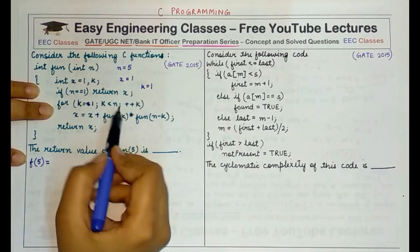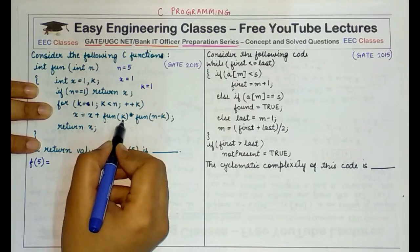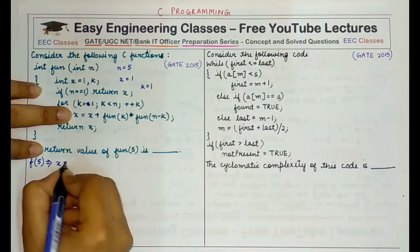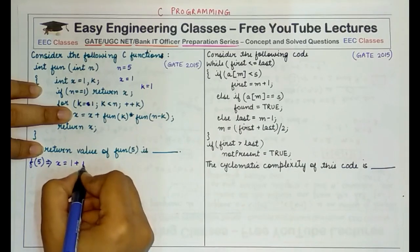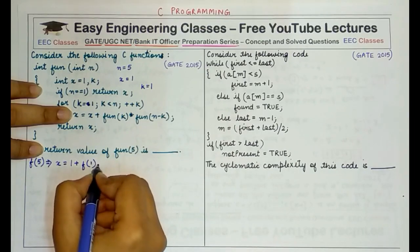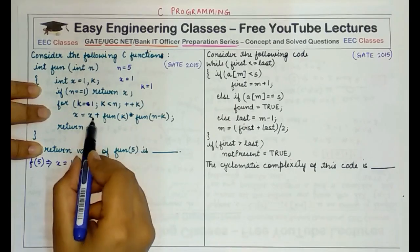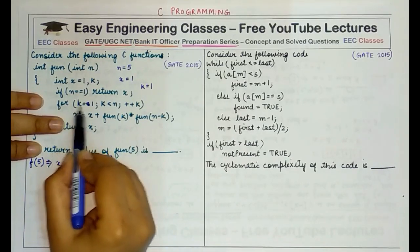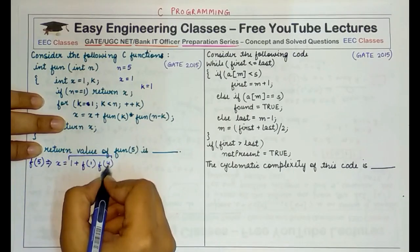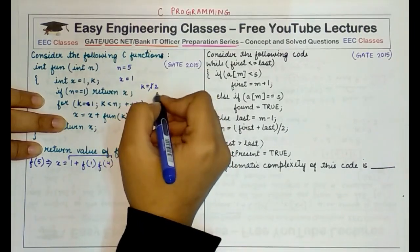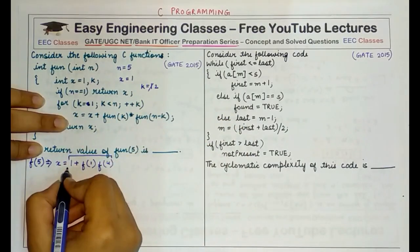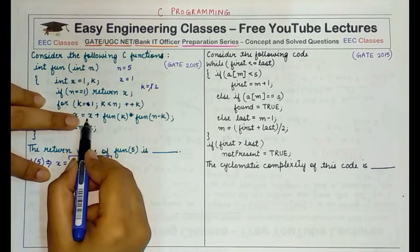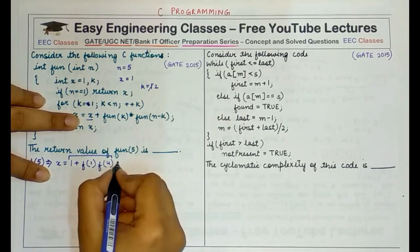So x will be assigned the initial value of x which is 1, plus f(k) — k is 1 — multiplied by f(n minus k), which is f(4). Once we calculate this value, k is incremented to 2, and 2 is less than 5, so we add to the existing value of x — which is 1 plus f(1) times f(4) — the result of f(2) multiplied by f(3).